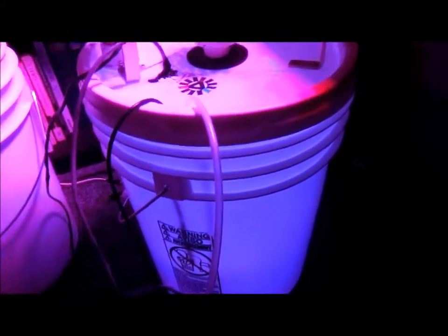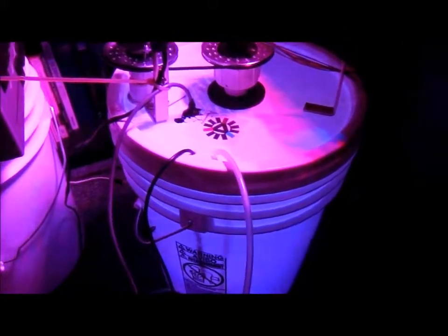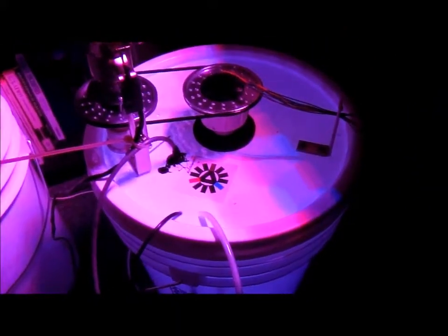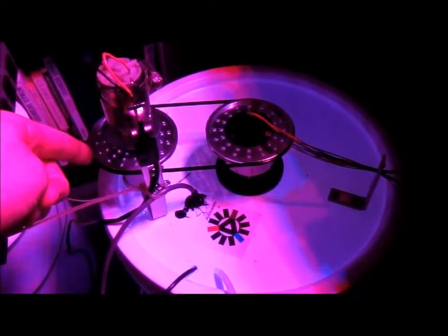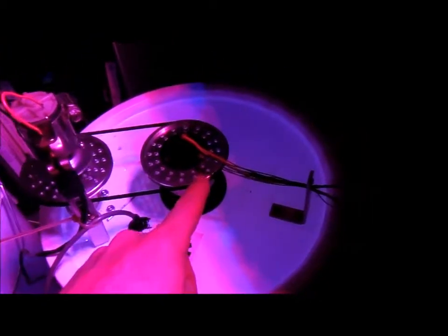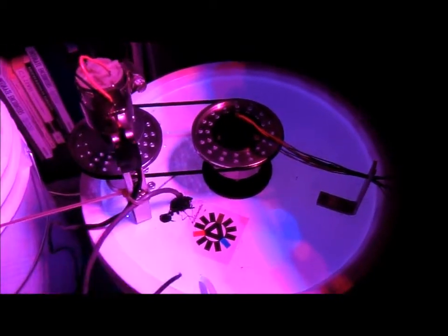This unit here is the photobioreactor, and that's just a fancy name for a grow unit for algae that's controlled. And what you have here is a DC motor going to the sprocket pulley, and then the rubber band in between. This will rotate so that this item here will rotate.